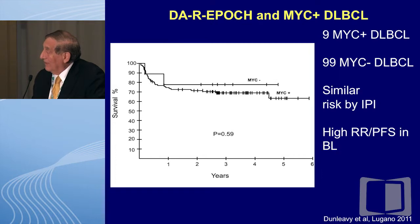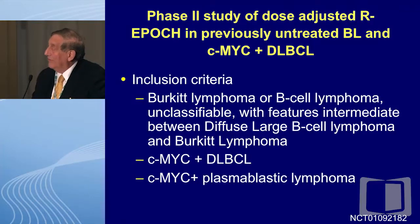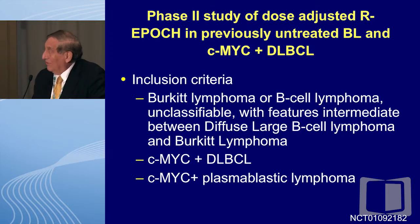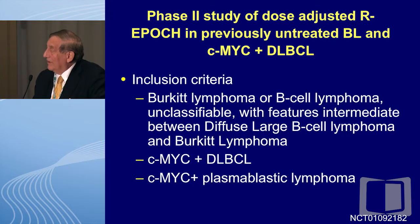This study comes out of the National Cancer Institute — Dr. Dunleavy and Dr. Wilson. They looked at nine MYC positive diffuse large B-cell lymphomas versus 99 MYC negative diffuse large B-cell lymphomas. Given dose-adjusted R-EPOCH, the results were pretty similar, including risk definitions by the IPI. This looks promising, though it's not a randomized study. A subsequent phase two study of dose-adjusted R-EPOCH in previously untreated Burkitt's lymphomas and MYC positive diffuse large cell lymphomas is ongoing, and data should be coming out — hopefully at the next ASH meeting.